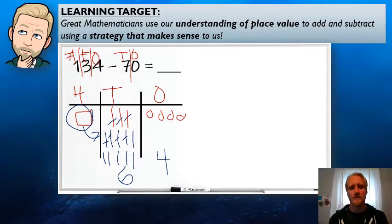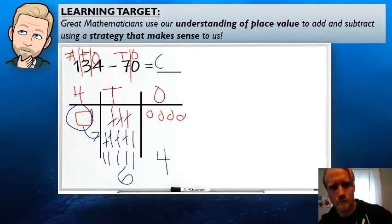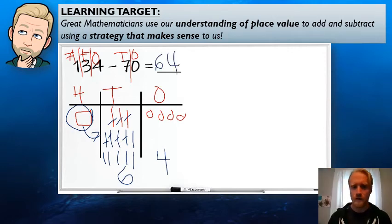All right. Learning those mental math facts are helping out. And do we have anything in the hundreds place? No, good. You're not getting tricked, right? We moved that hundred over into tens place. So 134 minus 70 is 64. Good job.